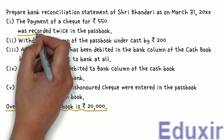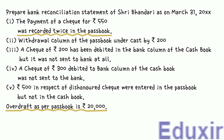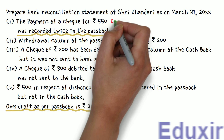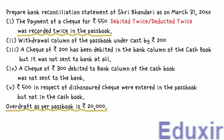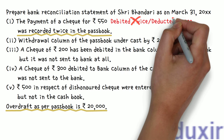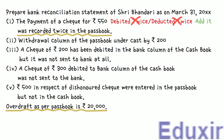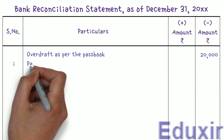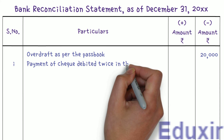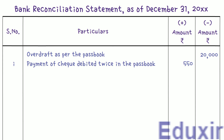Let us now take up the next detail. It is given that the payment of a cheque for 550 rupees was recorded twice in the passbook. This is an error committed by the bank wherein the cheque amount is debited twice. As this is a bank error, the additional entry will not be there in the cashbook, causing a difference between the bank passbook balance and the business cashbook balance. We need to add this amount to the passbook balance to get the cashbook balance. Let us write the particulars as 'Payment of cheque debited twice in the passbook' and enter 550 rupees in the plus amount column.